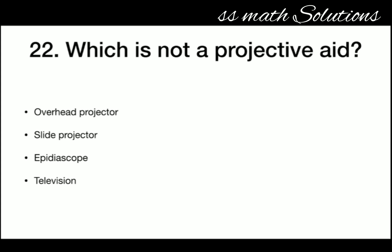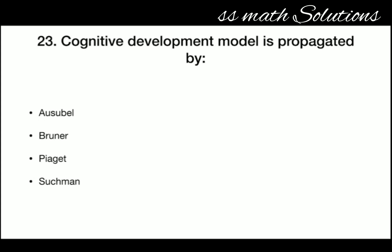Which is not a projective aid — overhead projector, slide projector, epidioscope, or television? Television is not a projective aid. Next: the cognitive development model is propagated by — Ausubel, Bruner, Piaget, or Suchman? The answer is Piaget. The cognitive development model is propagated by Piaget.